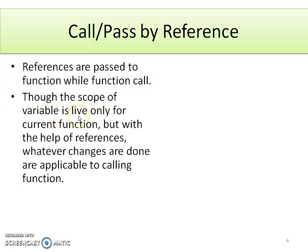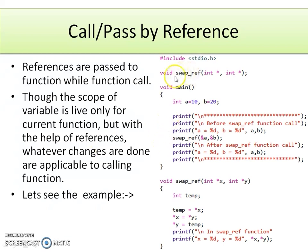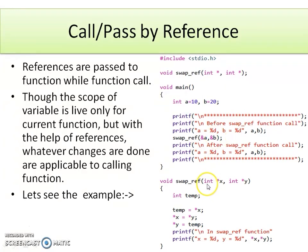Though the scope of a variable is live only for the current function, with the help of references, whatever changes are done are applicable to the calling function. Let's see the example where swapRef function is declared with two pointer-type parameters. Since they are pointers, during the function call we need to pass the addresses of two integer variables. Here a and b are declared as integers and their addresses are passed to the function. While jumping from the calling to the called function, the addresses are collected in x and y. The logic of swapping two numbers is implemented using a temporary variable.